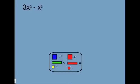So we have 3x squared minus x squared. We need to model that. So we'll start with 3x squared, and then we're going to subtract x squared. So we'll put that one over here. So we have 3x squared minus x squared.